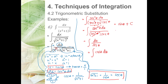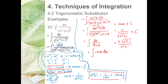From the right triangle, sin θ = x/√(x²+1). So the result is x/√(x²+1) + C. Since we don't want a radical in the denominator, we rationalize. The final answer is x·√(x²+1)/(x²+1) + C.